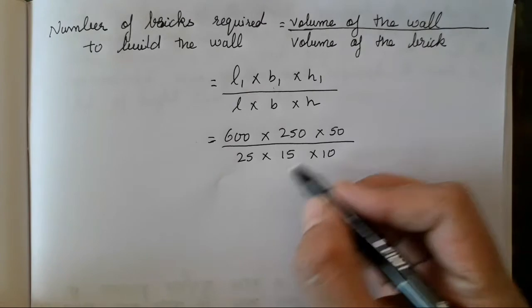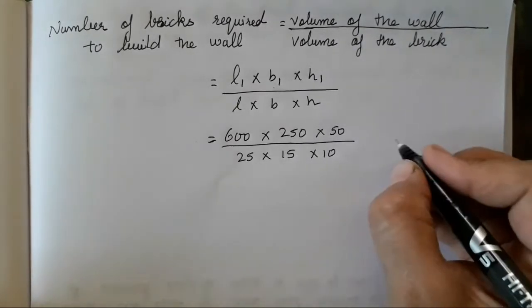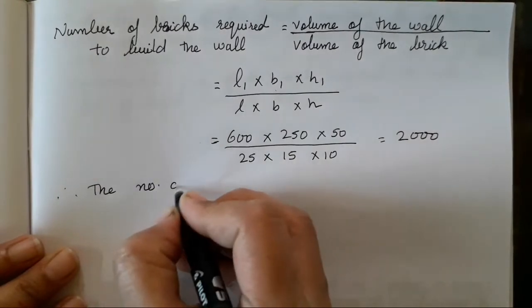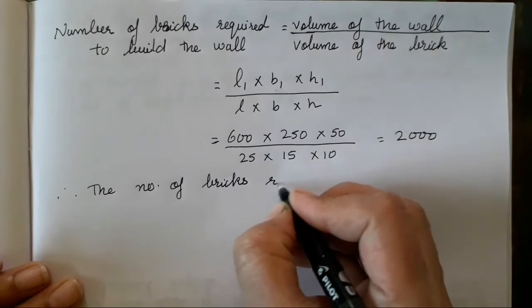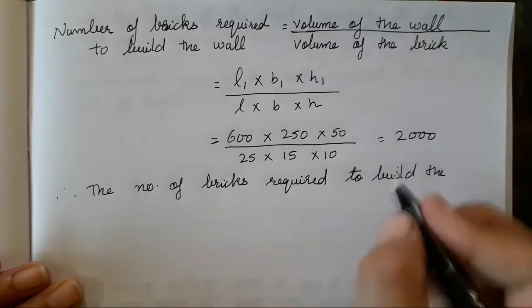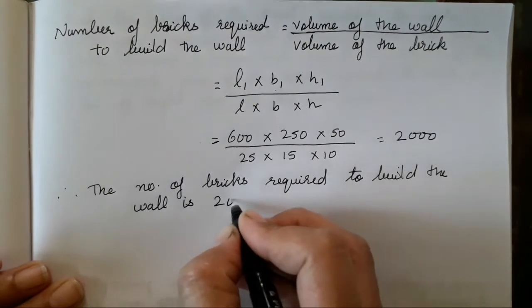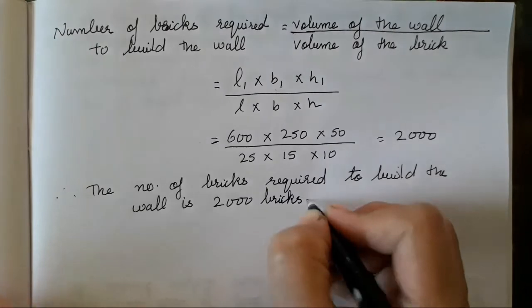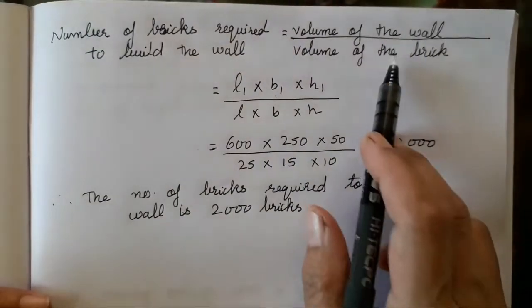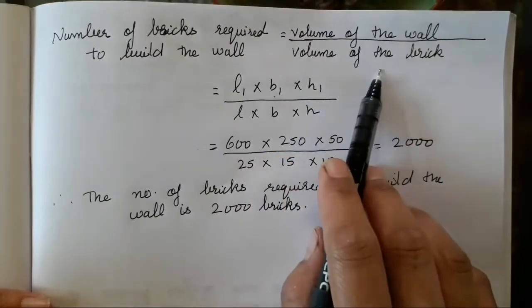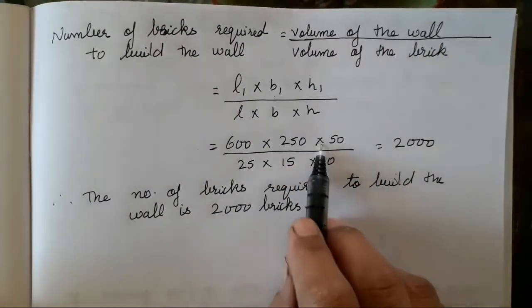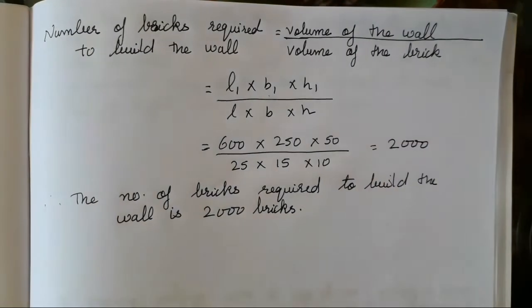This is very easy to divide children. With the 5 table you all can reduce it. The answer is going to come 2000. Therefore, the number of bricks required to build the wall is 2000. Isn't it easy? Just convert meters into centimeters, use both formulas together. Reduce it with the table of 5, you will get your answer, 2000.